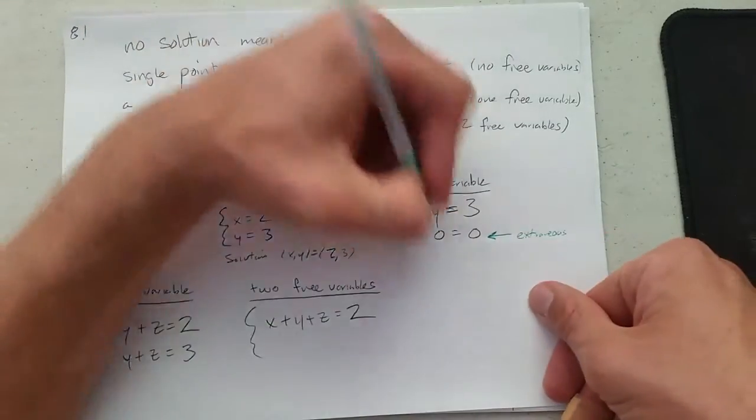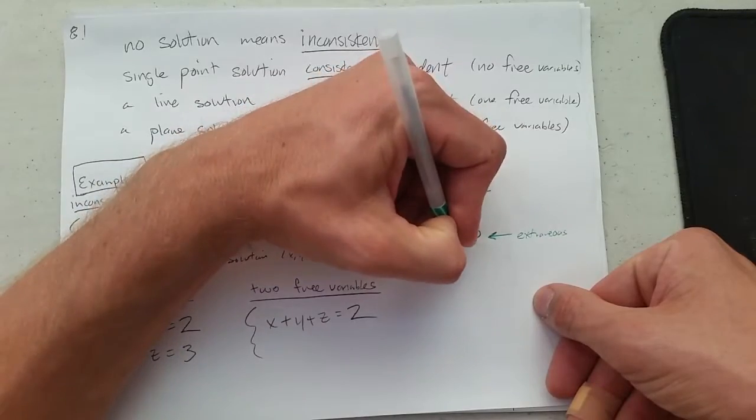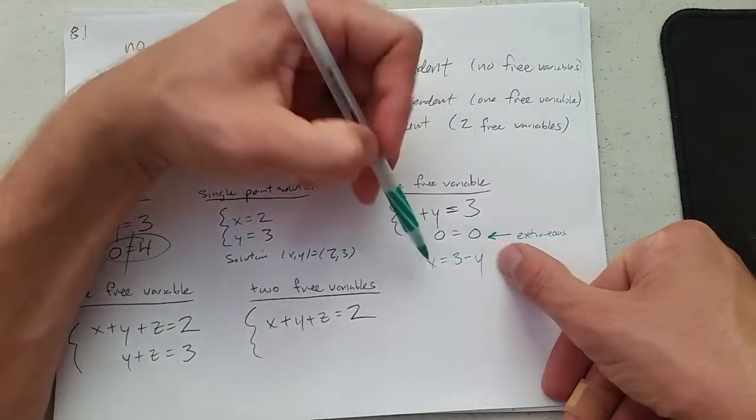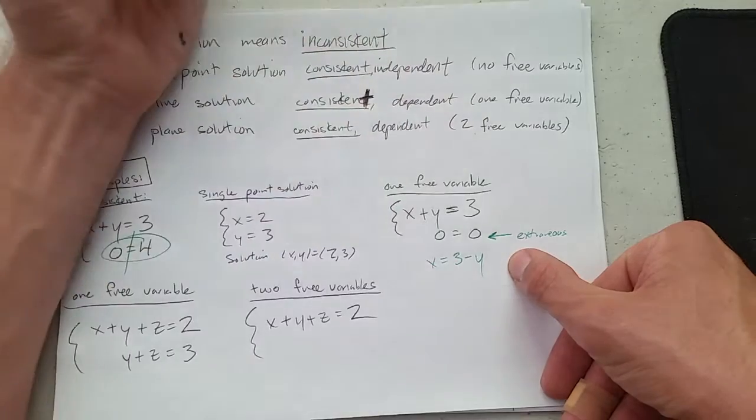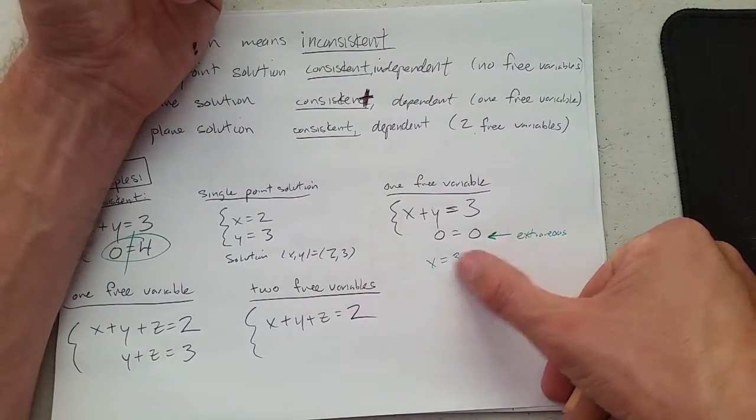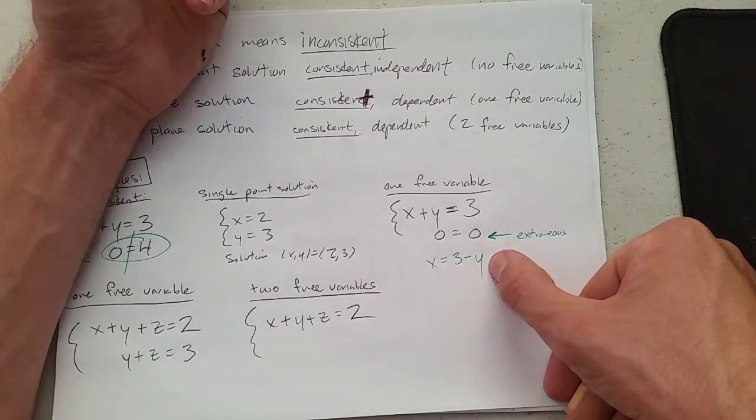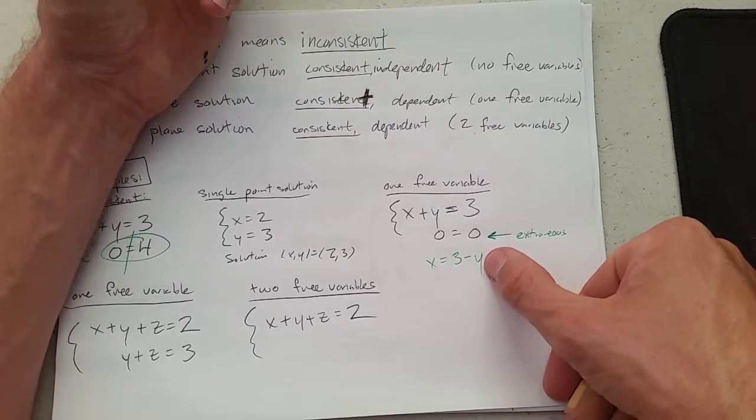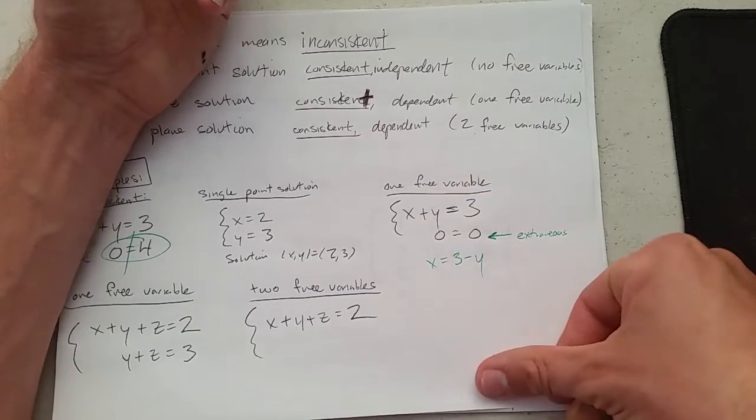How do I figure out what X is going to be? You pick whatever you want for Y, and then I will tell you what X needs to be. You pick 0 for Y, X has to be 3. You could pick 1 for Y, X has to be 2. Any number you pick for Y, I can tell you what X is.